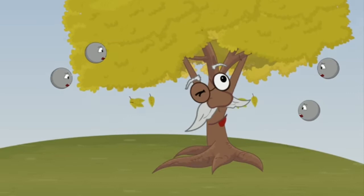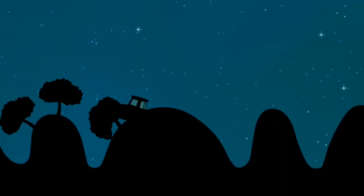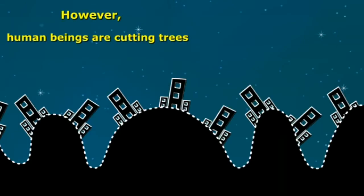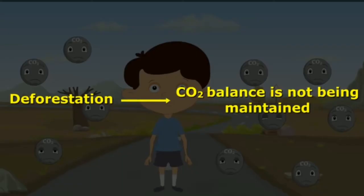Trees are our very good friends because they take in carbon dioxide and give out oxygen. So trees help reduce carbon dioxide. But nowadays what we are doing is cutting more and more trees — this condition is known as deforestation. We are building buildings, hospitals, and roads, and for that, human beings are cutting trees.